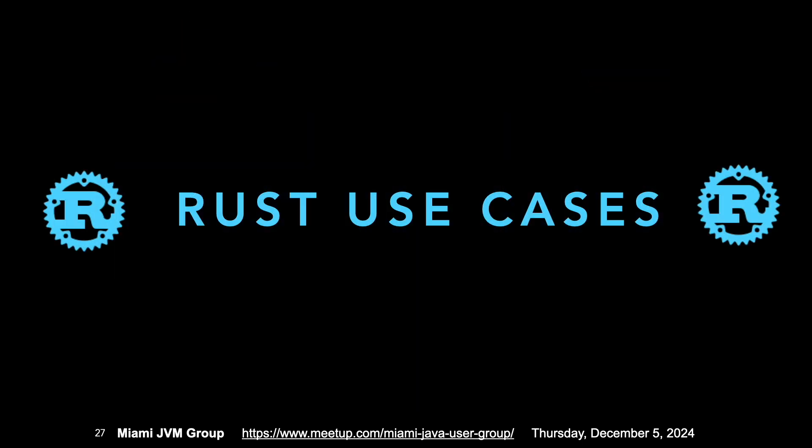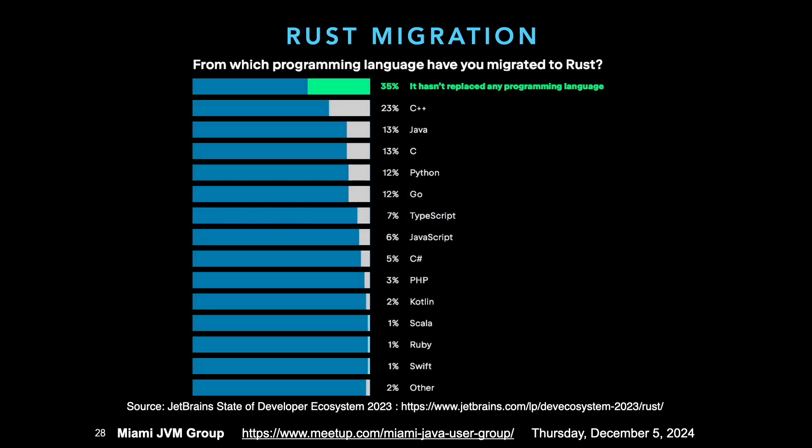Let's look at some use cases. From the JetBrains Developer Ecosystem 2023 data, when asked 'which programming language have you migrated to Rust?', you see a lot of C++. There's also a notable Java presence, but the majority of respondents say nothing is being replaced — they're programming new things in Rust. You see C, C++, and also Go, where developers want to reduce memory usage, increase speed, and have a compact footprint.